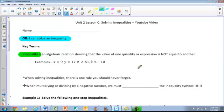An algebraic relation showing that the value of one quantity or expression is not equal to the other. So what this tells us is our two sides are not equal. For example, x is greater than 9, y is less than 17, z is greater than or equal to 51, or k is less than or equal to negative 10. These should look familiar to you.